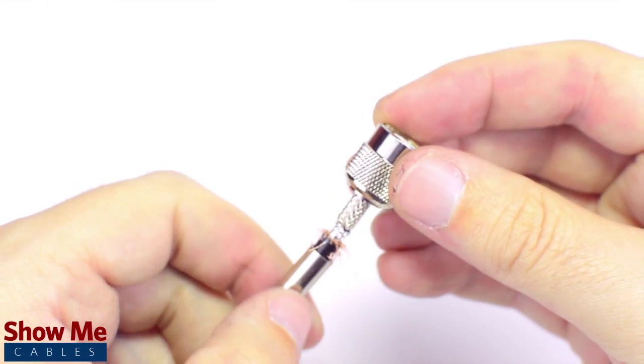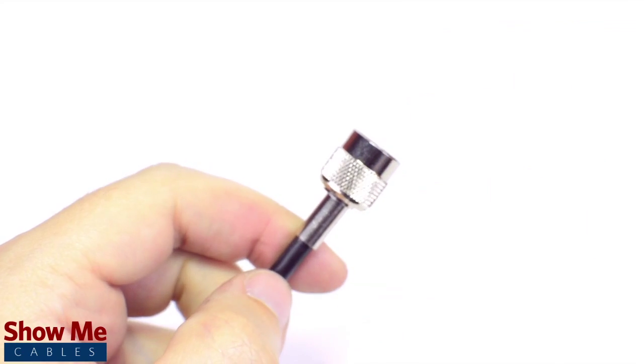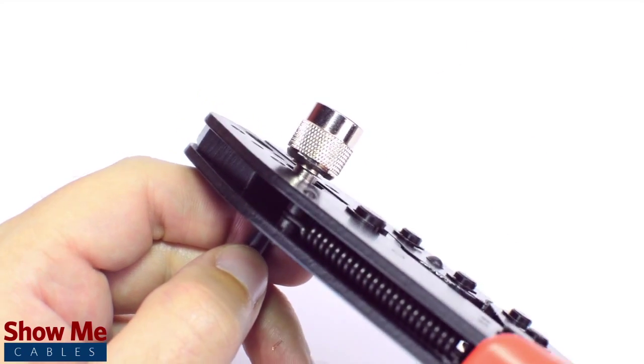Then, slide the ferrule up to the base of the connector, folding the shield with it. Crimp the ferrule under the outer jacket to complete termination.